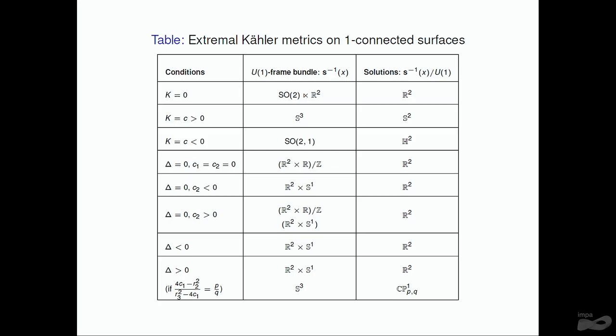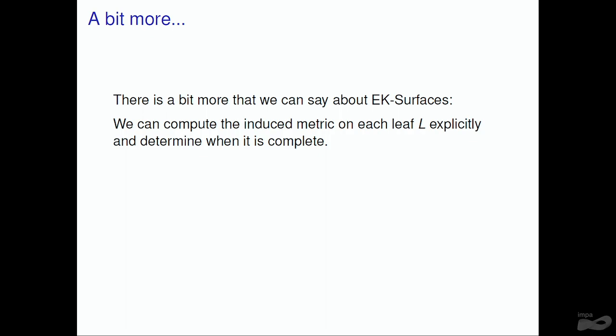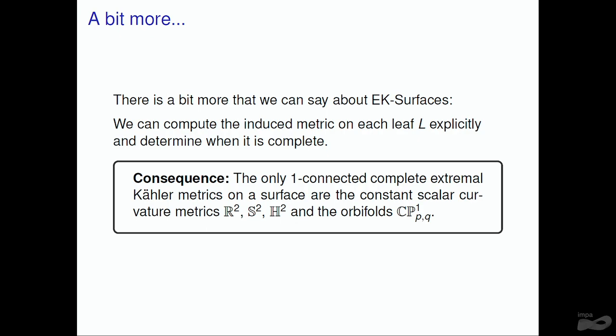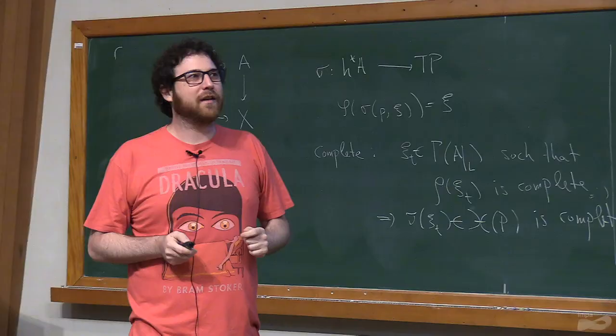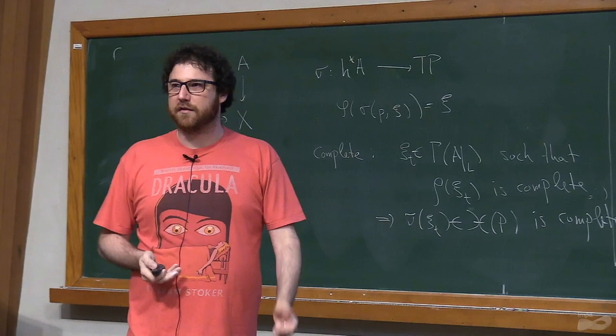For the spherical leaves, you parametrize the leaf, construct the G-splitting, compute the curvature, compute the G-monodromy, and find that some ratio must be rational for these to be G-integrable. So only rational leaves are G-integrable, and the others are not. This gives a complete list of extremal Kähler metrics on simply connected surfaces which are complete (in the realization sense). You can further determine which are metrically complete by the procedure described; the only ones are R^2, S^2, H^2, and the orbifolds (weighted projective spaces). All have constant scalar curvature except the orbifold one. It's also possible to write down explicit formulas for the metrics using Poisson geometry.